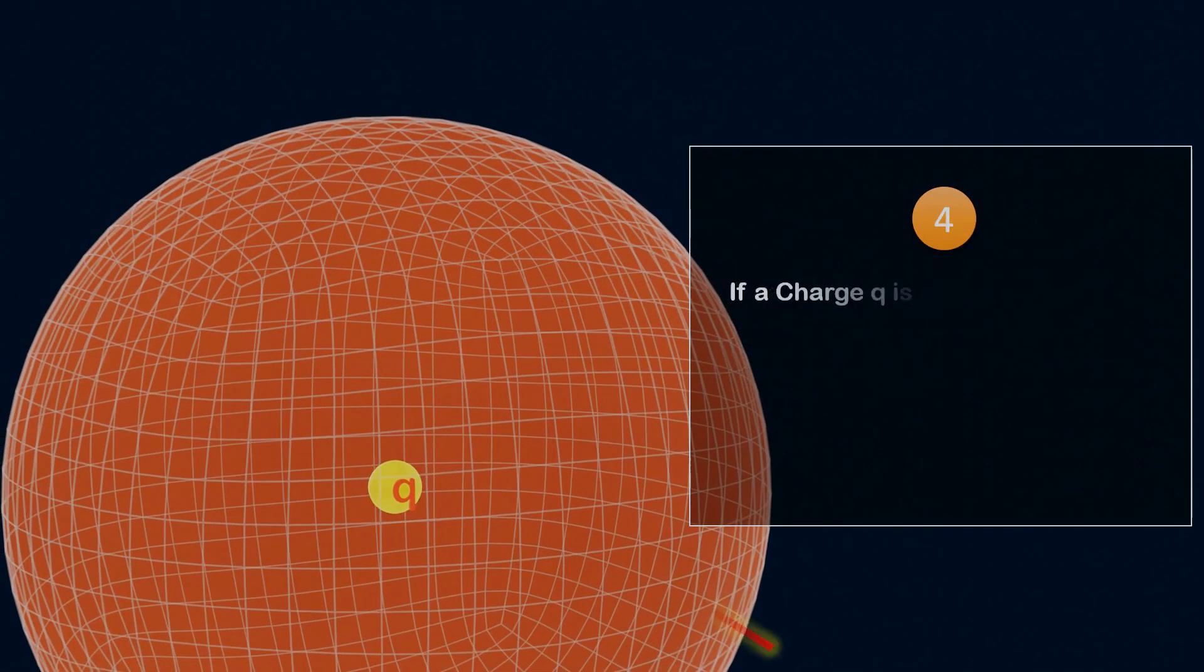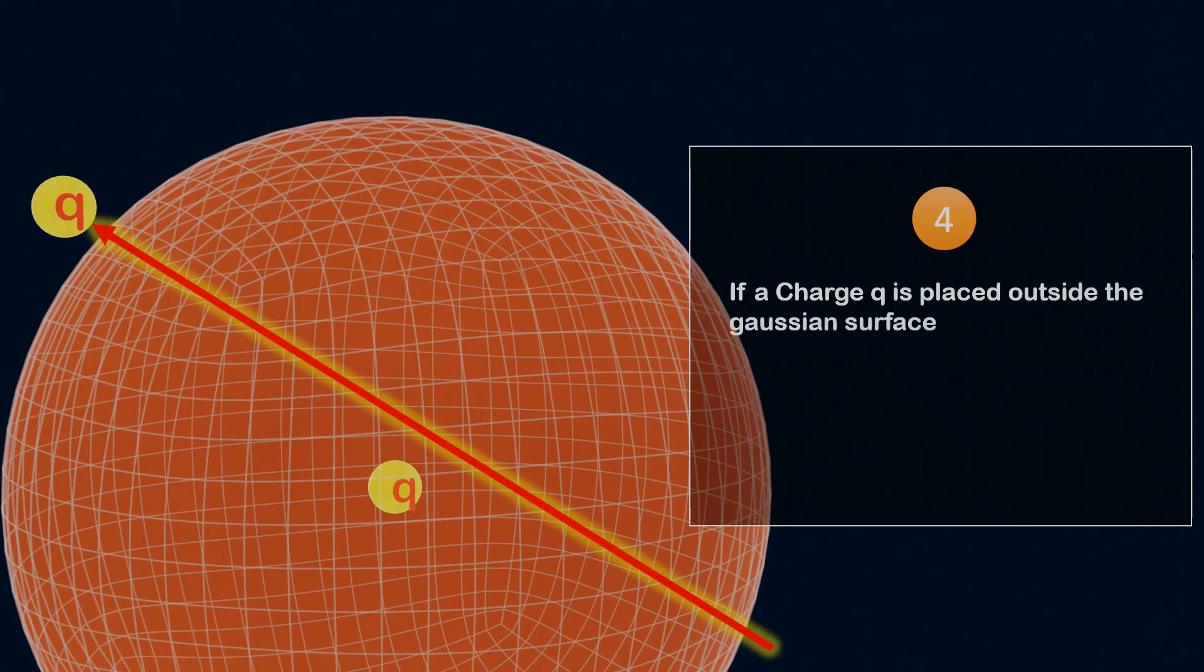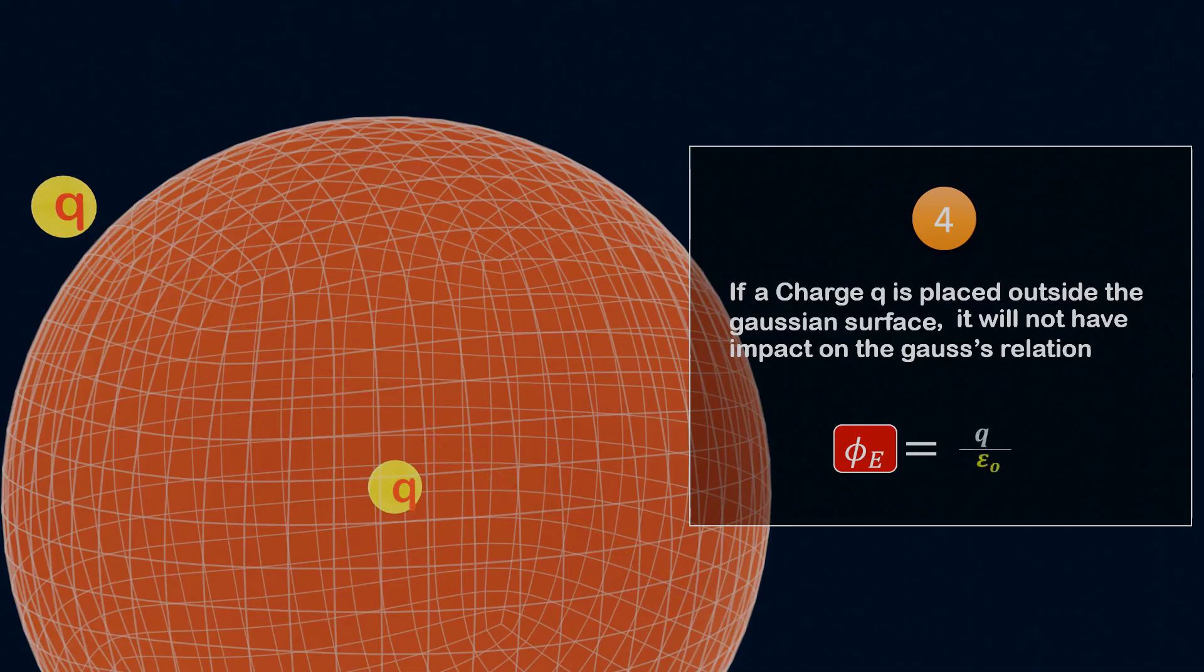Fourth point, if a charge Q is placed outside the Gaussian surface, it will not have any impact on the Gauss's relation, electric flux equal to Q by epsilon naught. Although the charge outside will contribute to the electric flux, the resulting electric field line from the charge will enter the Gaussian surface at one end, and exit at other end, effectively cancelling out the contribution from the external charge Q.